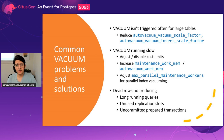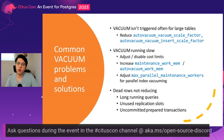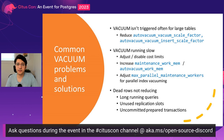Common autovacuum problems start with vacuum not being triggered often enough for large tables. Autovacuum decides when to trigger based on a percentage of the table changing — the default of 0.2 means 20% of the table must change before vacuum is triggered. For a table with a billion rows, that's 200 million rows of bloat. In those cases, it's beneficial to reduce this to something like 0.02 or even 0.002, depending on how much bloat you can tolerate.